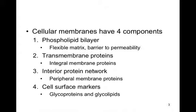The four components are: a phospholipid bilayer, which is a flexible matrix and a barrier to permeability; transmembrane proteins, which are integral membrane proteins integrated into the membrane; an interior protein network, where cytoskeletal elements, particularly intermediate filaments and actin filaments, help anchor some proteins in place in the membrane and hold the structure of the cell.